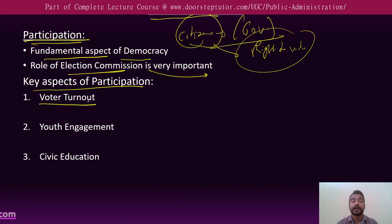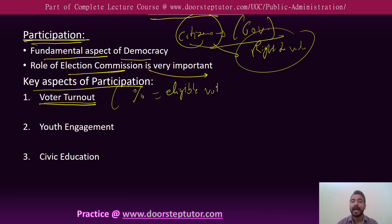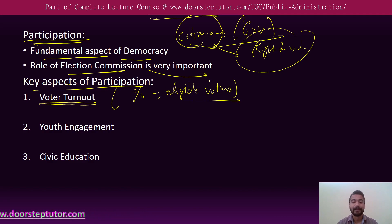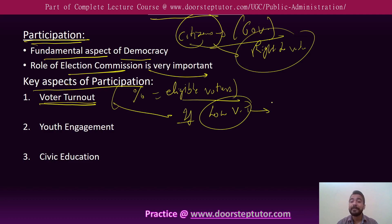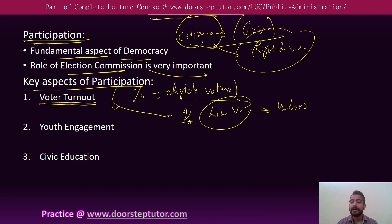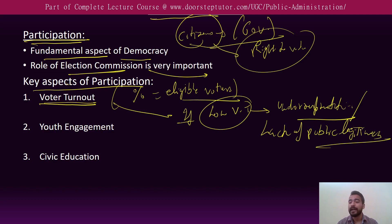The first aspect is voter turnout. Electoral participation is often measured by voter turnout, which is the percentage of eligible voters who cast their ballots. Low voter turnout can be a concern for democracy, as it may lead to the under-representation of certain groups or a lack of public legitimacy for the elected officials.